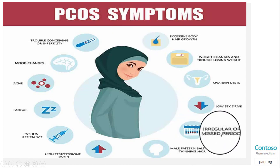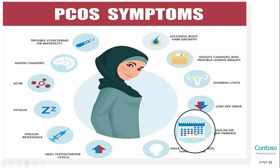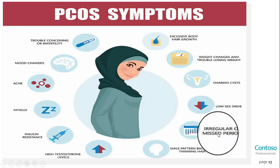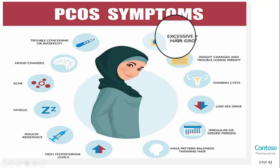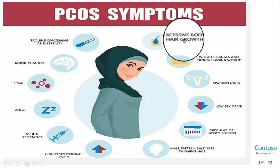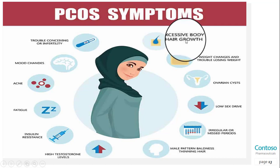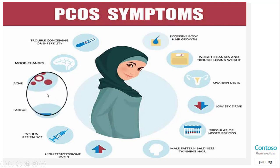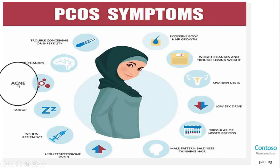The second symptom is heavy bleeding — the uterine lining builds up for a longer period of time, so periods that do occur can be heavier than normal. Third is hair growth: more than 70 percent of women with this condition grow hair on the face and body, including on the back, belly, and chest. Excessive hair growth is called hirsutism. The fourth symptom is acne — male hormones can make the skin oilier than usual and cause breakouts on the face, chest, and upper back.